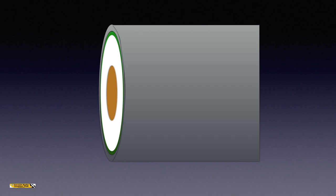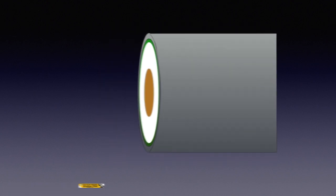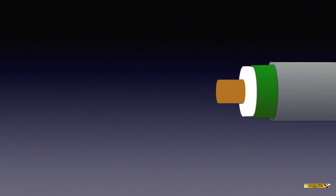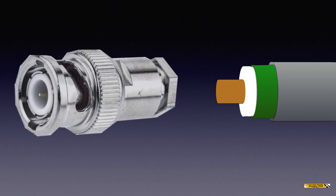If we want to fit a plug to that feeder, we have to strip back the various layers. We start with the outside layer and strip that back the most, then strip back the conducting braid, the dielectric insulator, leaving the central conductor protruding. On that, we want to fit a plug — it could be a BNC or possibly a PL259.